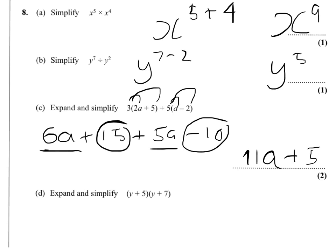Two marks for expanding and simplifying. So a straightforward sort of two linear brackets is going to give you a quadratic expression. You should realize you're going to get y squared. You're going to get y times 7, or 7y. Then you're going to get 5y.